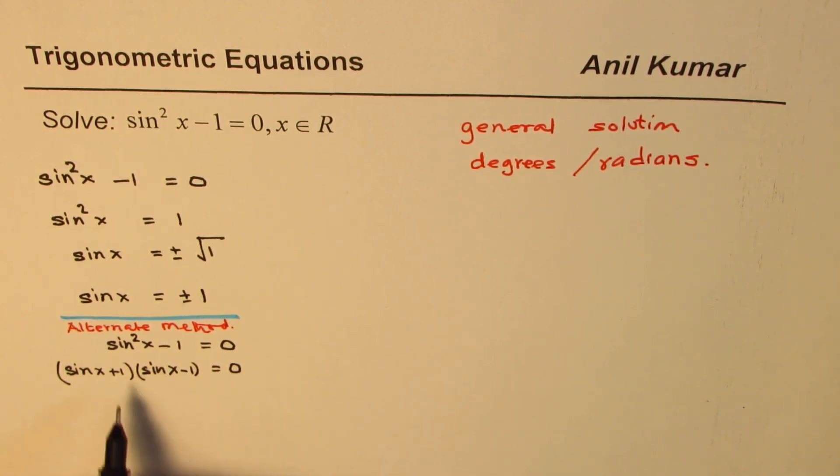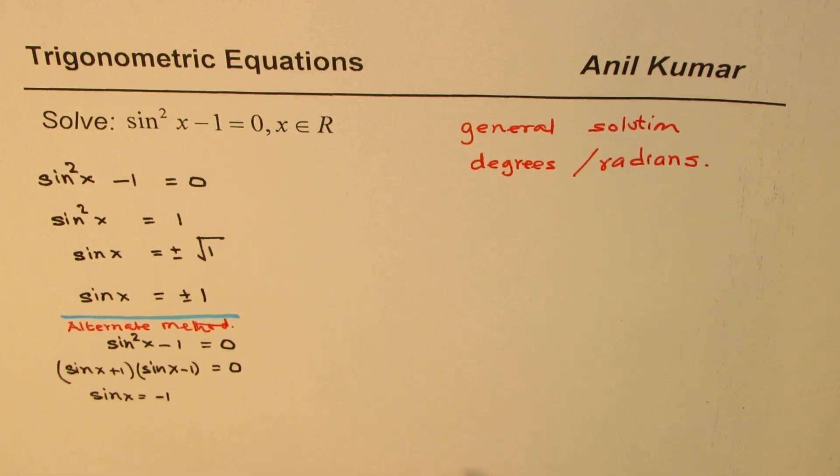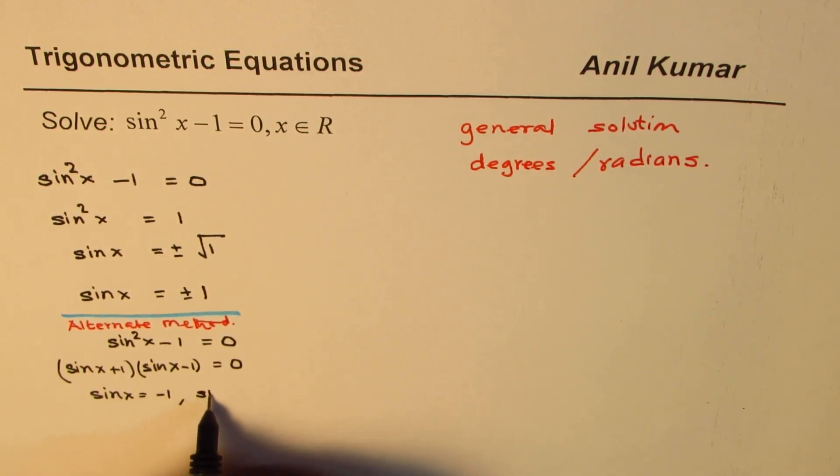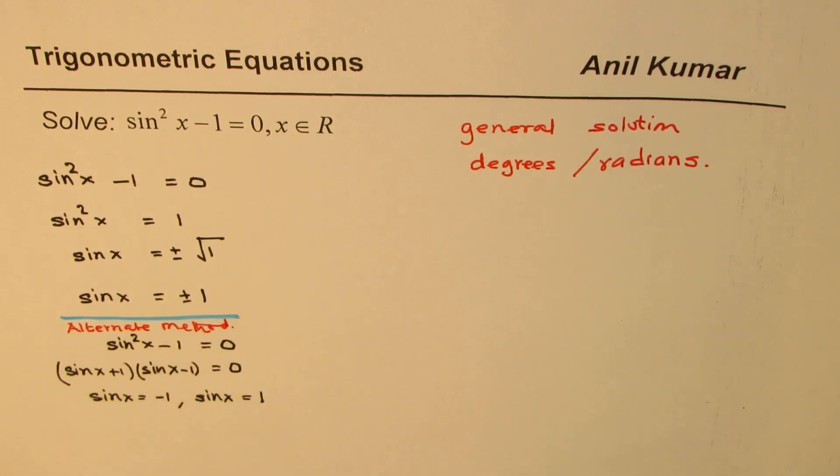So, that means there are two factors which when multiplied gives you 0. That gives you two different solutions. One is that sine x equals to minus 1. The other one gives you sine x equals to plus 1. So, you get both the solutions. Either way you do, you get the same solution.